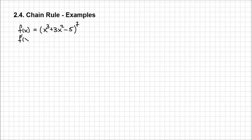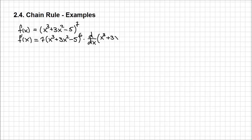That being said, let's calculate f prime of x. Applying the power over function rule, we're going to have the power itself, 7, times the expression x to the power 3 plus 3x squared minus 5 at power 6, times the derivative d/dx of the expression that we had in the parentheses, x to the power 3 plus 3x squared minus 5. And now we can continue differentiating and simplifying.